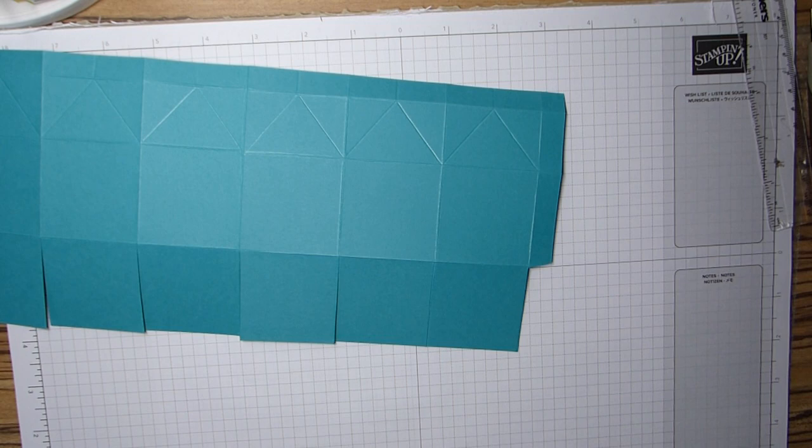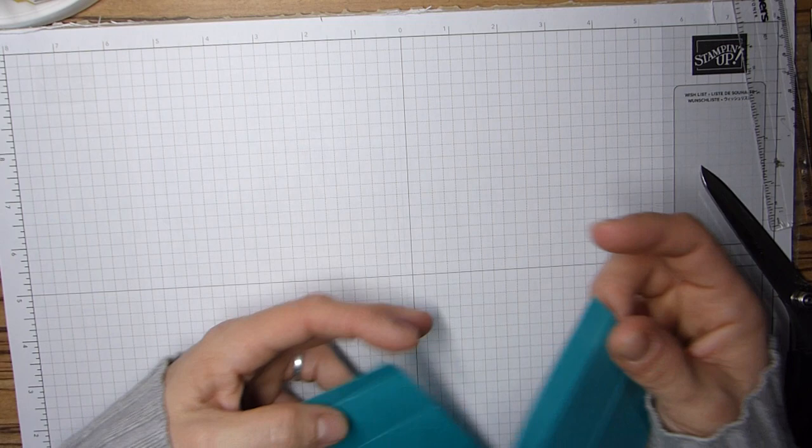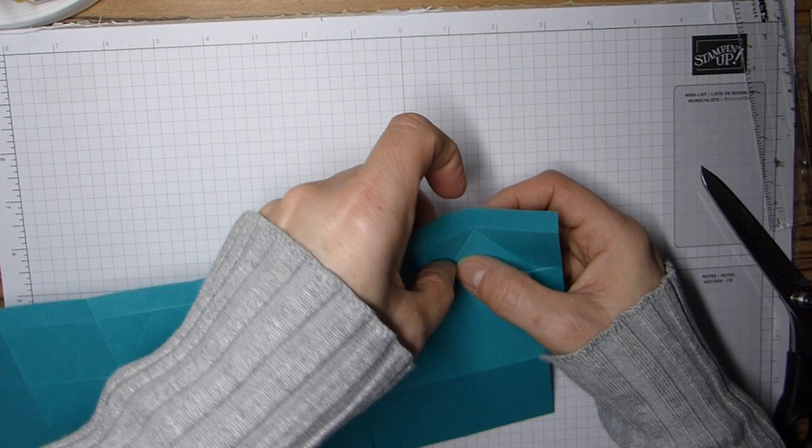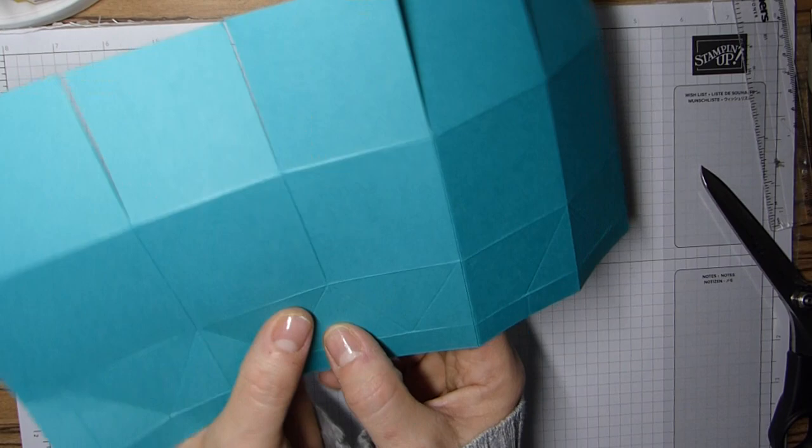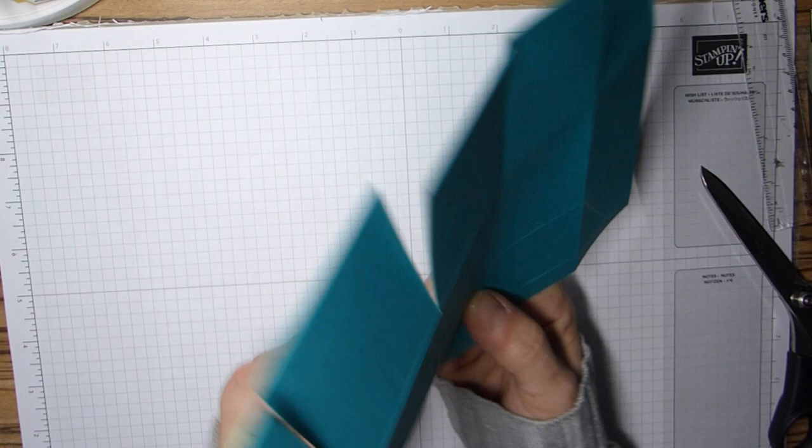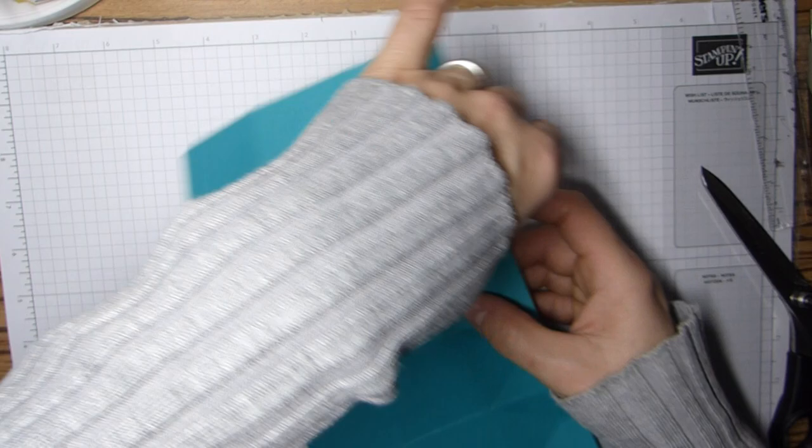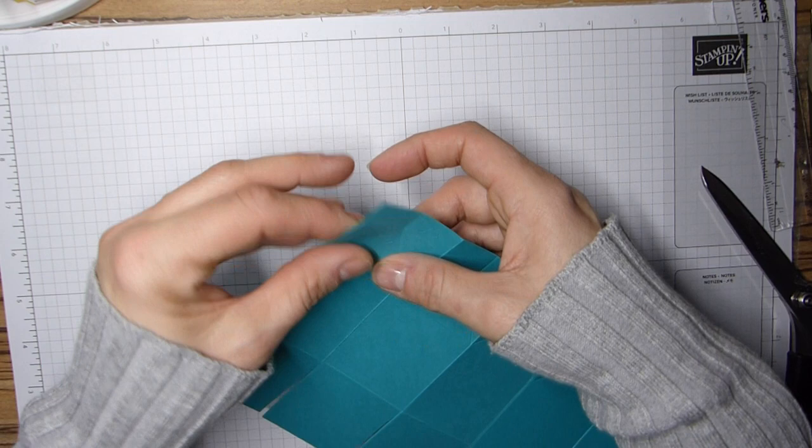So you can already see this little beauty starting to take shape. We need to make sure that we fold all of our triangles but we need to fold them this way. So you're actually folding them the opposite direction. That one will be a bit stiffer because you've got the extra paper sitting just behind it.